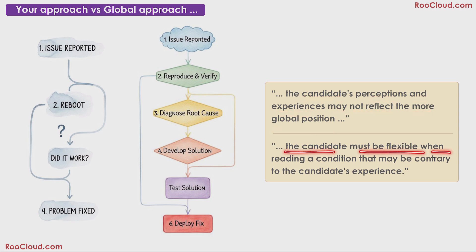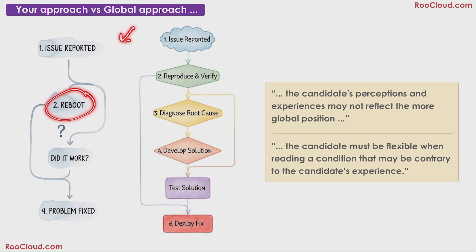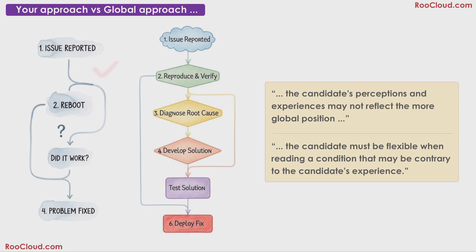The candidate must be flexible when reading a condition that may be contrary to the candidate's experience. This simply means that while going through the manual or any external resource, read it with an open mind, because your current approach towards a topic or a situation may be different from what the current global approach is. For example, if there is any issue with a server, my personal approach might be just to reboot it and it will work. But the current global approach may be to verify the error, look at the logs, diagnose the root cause, develop a fix, test the fix, and deploy the fix.